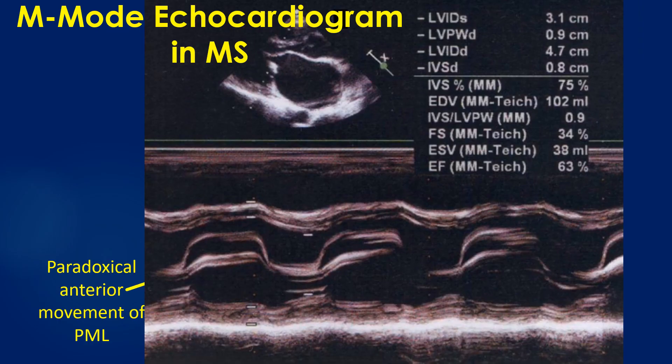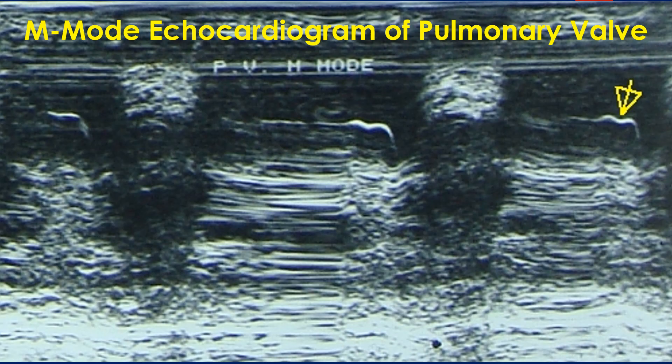The M-mode echocardiogram in mitral stenosis shows the flat EF slope and paradoxical motion of the posterior mitral leaflet. Normally, the anterior mitral leaflet shows an M-shaped anterior movement and the posterior mitral leaflet shows a smaller W-shaped posterior movement. The upper panel shows the doming of the anterior mitral leaflet in diastole. Mitral stenosis with pulmonary hypertension is evidenced by the flat EF slope of the pulmonary valve M-mode echocardiogram and a shallow A wave marked by the arrow. A mid-systolic notch may also appear in severe pulmonary hypertension.